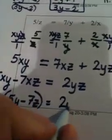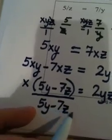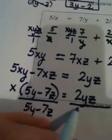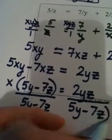Equals 2yz. And to finish solving, we're going to divide by (5y - 7z). That's one expression, and that cancels out, leaving us with this answer. Now there are two comments I want to make about this answer.